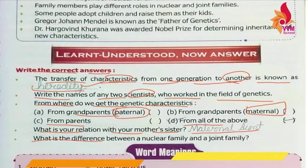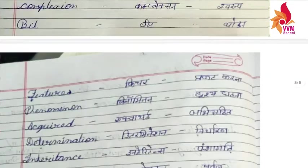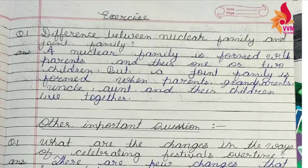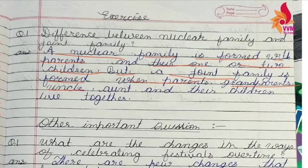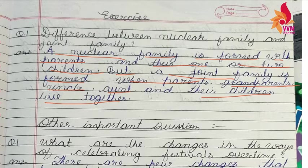Next we have: what is the difference between a nuclear family and a joint family? A nuclear family consists of only parents and their one or more children. But a joint family is when parents, grandparents, uncle, aunt and their children live together. In a joint family there are grandparents, uncle, aunt, and their children — all living together. That type of family is called a joint family.